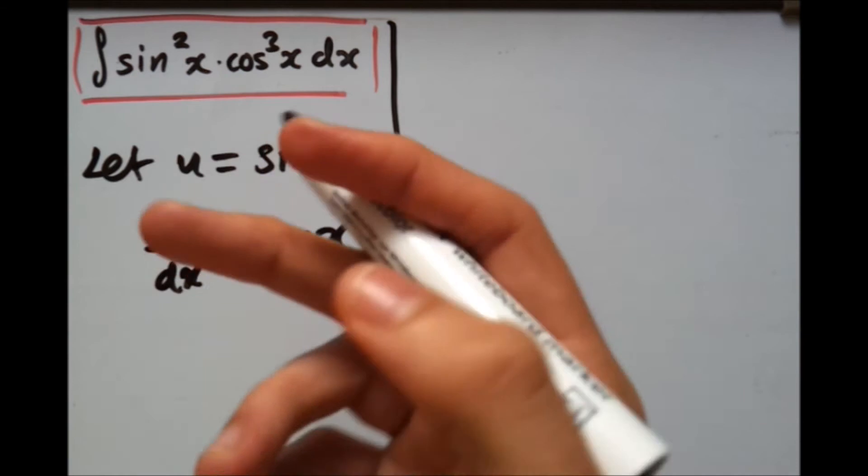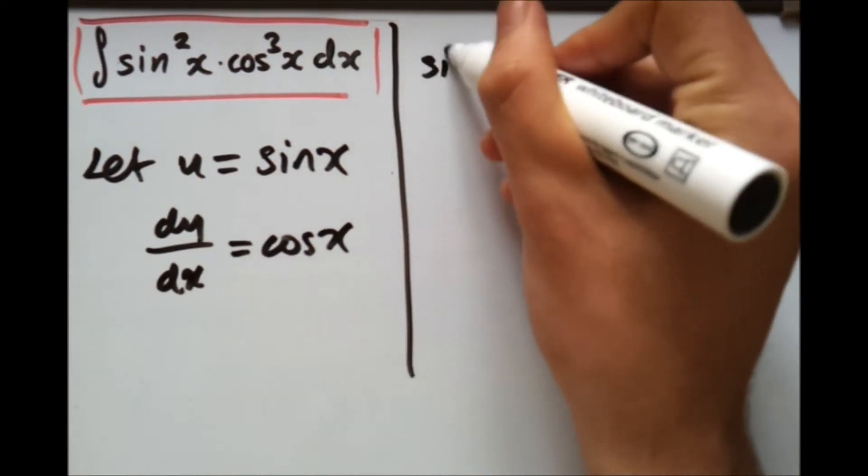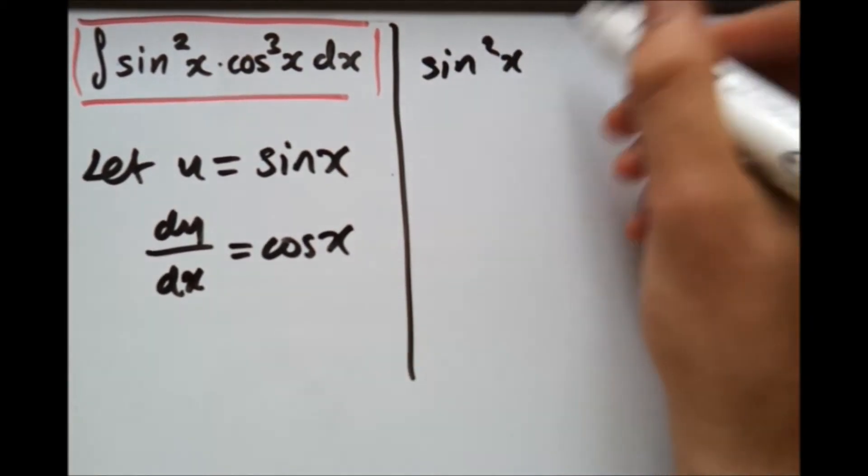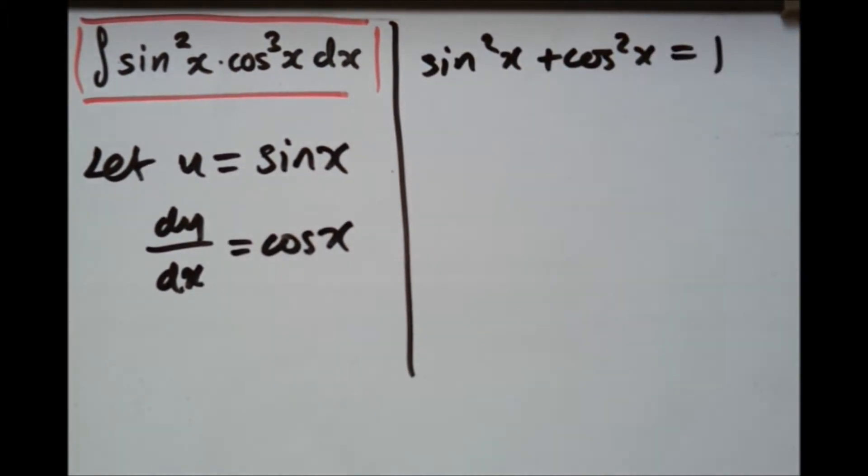Normally we can just sub this in and just get an answer, but for this kind of examples, we need to use some sort of trigonometric identity, such that we've got to simply say sin squared x plus cos squared x equals 1. I'll tell you why in a minute.